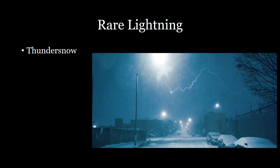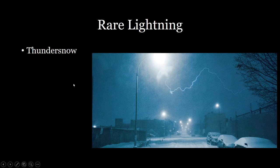Besides normal lightning, there are some really cool rare lightning events. One is thundersnow — most lightning happens in warm, wet environments, but it can still occur in cold environments with predominantly snow. Because snow has such a high albedo and is so reflective, the result is that the entire sky and ground lights up in a really beautiful phenomenon.